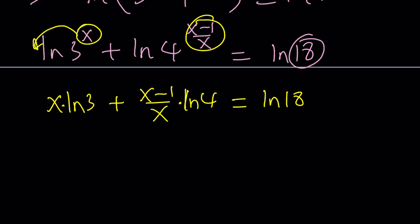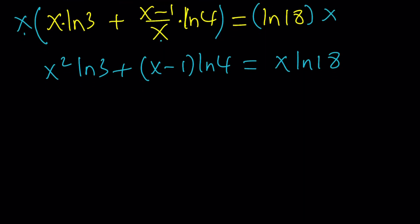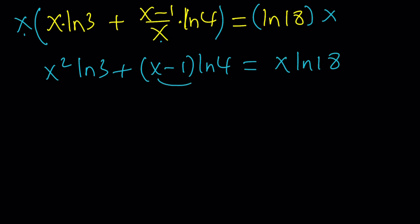Let's not break it down yet. Now, I do see an x in the denominator. I don't like that. This is rational. Let's make it quadratic. Multiply both sides by x and distribute. You're going to get x squared ln 3 plus these two x's are going to cancel out. x minus 1 times ln 4. And that's x times ln 18. Great.